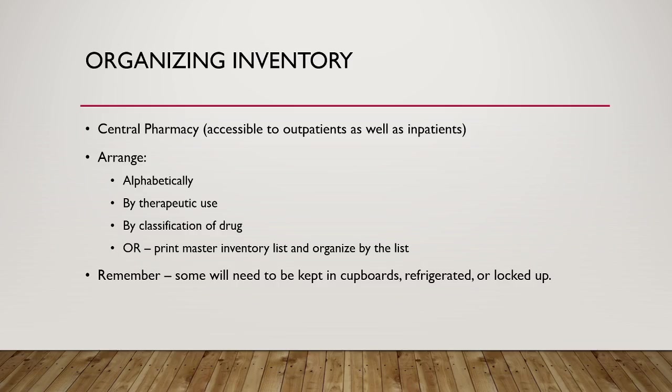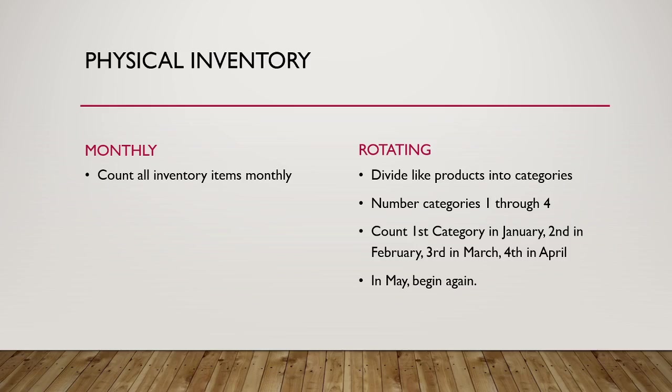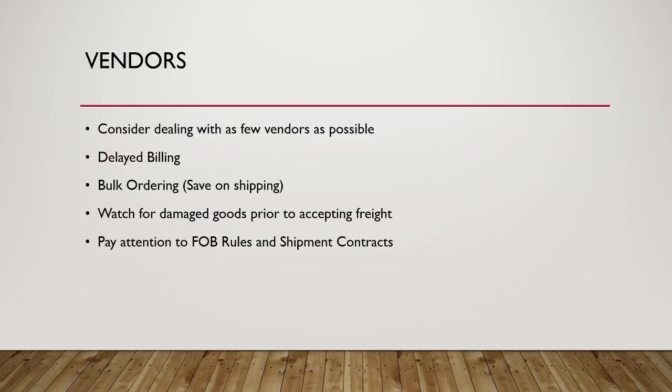Some medication will need to be kept in cupboards, refrigerated, or locked up in some way, so not everything on your master inventory list will be where you expect. When doing a physical inventory, we're actually counting things. Counting all inventory items monthly can take a while if you have a large pharmacy. A more efficient approach is to rotate inventory counts: divide products into four categories numbered one through four, count category one in January, two in February, three in March, four in April, then repeat — so each group is counted at least three times per year.